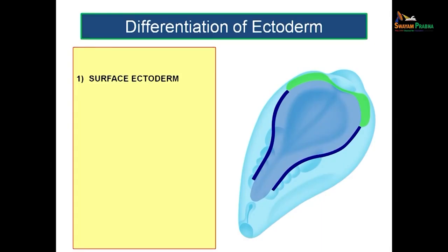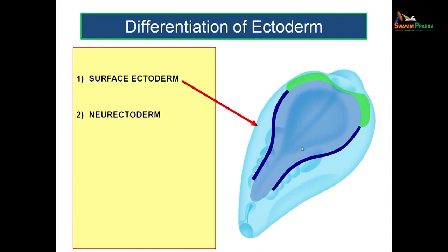Now let us have a look at the derivatives of ectoderm. Ectoderm is the topmost layer and it is getting differentiated into mainly two parts. One is known as the surface ectoderm — you can see the light blue coloured area as you look from above after removing the amniotic membrane. In the middle, somewhat on either side of the midline, you can see a dark blue coloured region, and this region is known as neural ectoderm. This is how the entire ectoderm is differentiated into two parts: surface ectoderm and neural ectoderm.